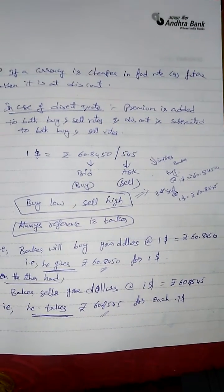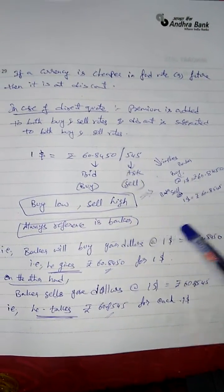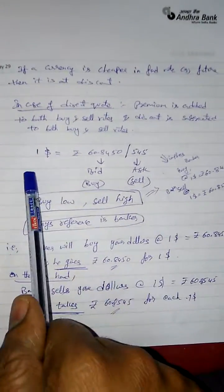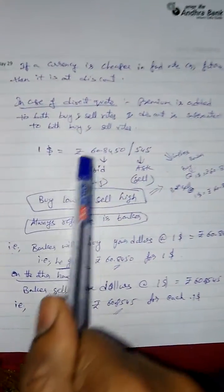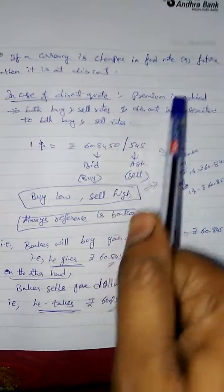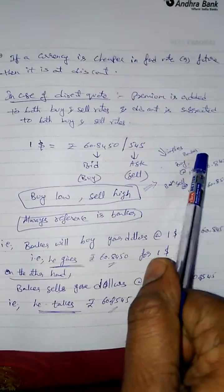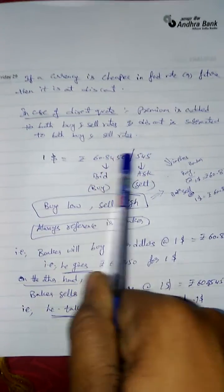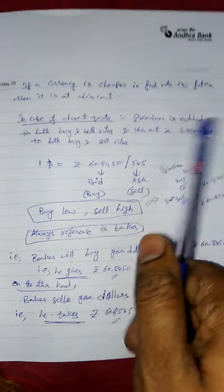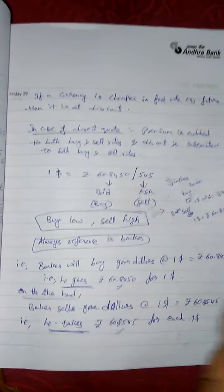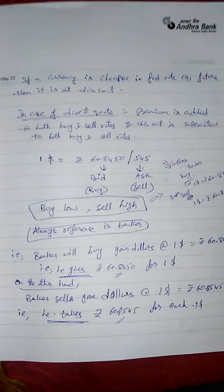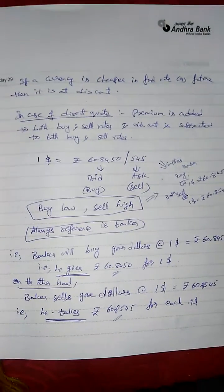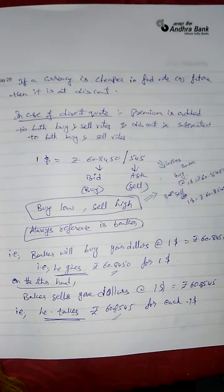In a direct quote — one dollar equals rupee 60.8450 slash 5445 — the first term is the bid rate and the second term is the ask rate. Always, bid and ask are with reference to the banker, and always buy low sell high. This means bid rate will always be lower compared to the ask rate.